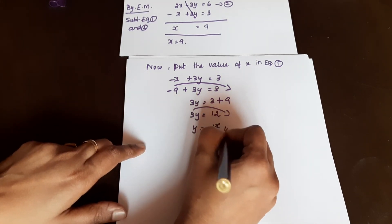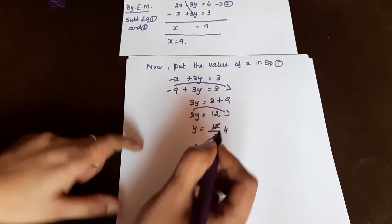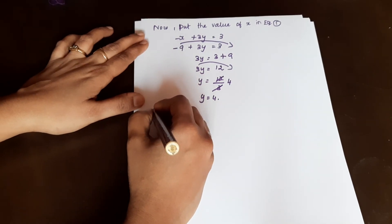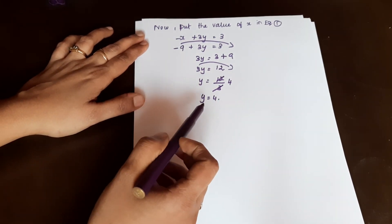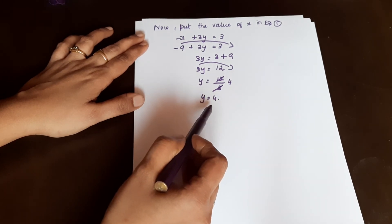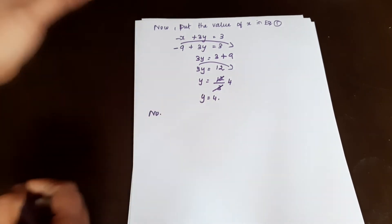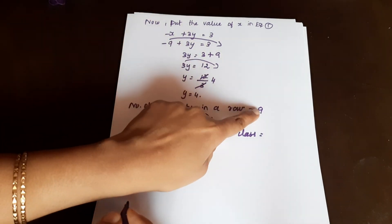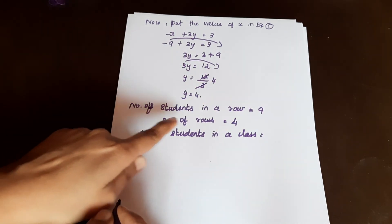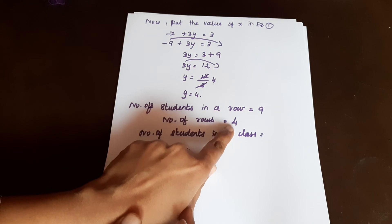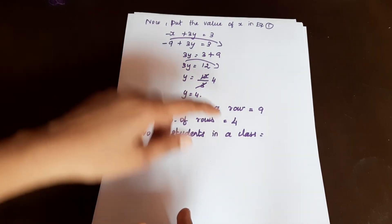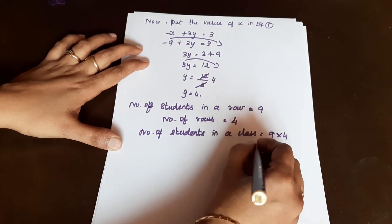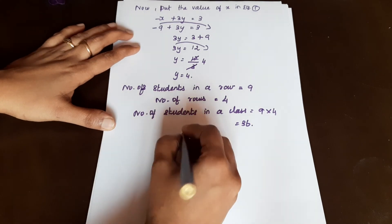So Y equals 12 divided by 3, which gives Y equals 4. Number of rows Y is 4, number of students per row X is 9. Therefore total number of students is X into Y equals 9 into 4 equals 36 students.